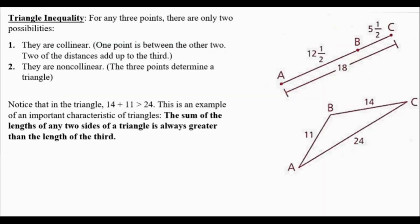The triangle inequality. For any three points there are only two possibilities. The first is that they are collinear, so one point is between the other two, and two of the distances have to add up to the third. In my figure to the right with points A, B, and C — segment AB plus segment BC adds up to the whole segment AC. Since this adds up, the three points are collinear.